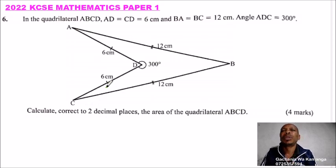So for us to be able to do that, we can identify this angle. Since this angle is 300, it means this angle here is 60 degrees, so that it makes an angle of 360.